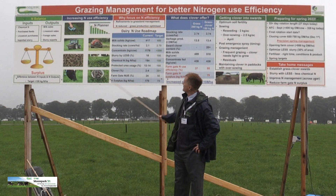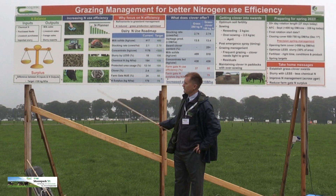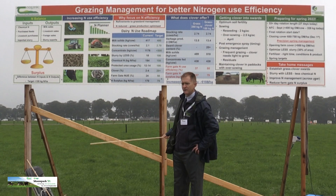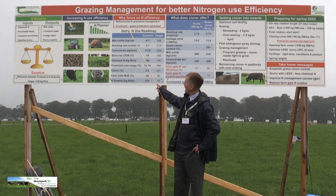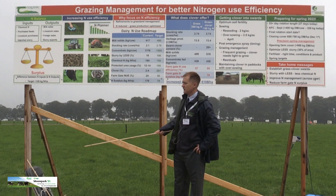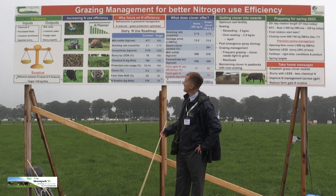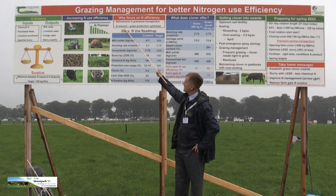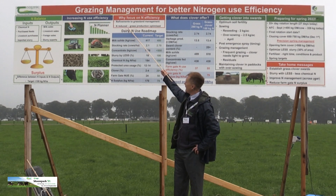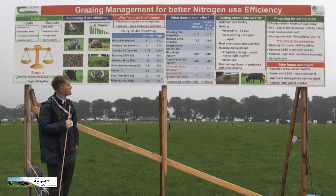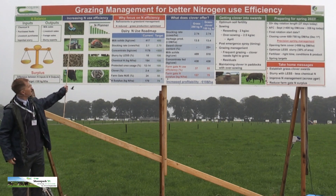Why focus on nitrogen use efficiency? It's not to say we're doing everything wrong — there are only refinements to our current grazing management approach needed. Three years ago there wasn't much clover on this farm, but now about 80% of paddocks have clover. What we're doing in a lot of the research here is reducing nitrogen input while optimizing grass production — we want to increase grass production as much as possible.